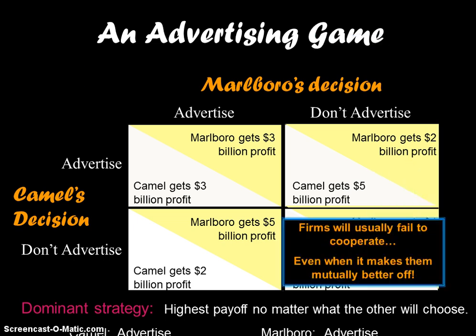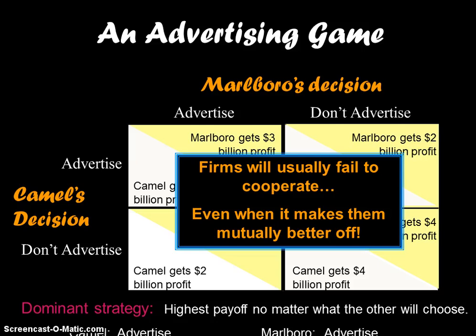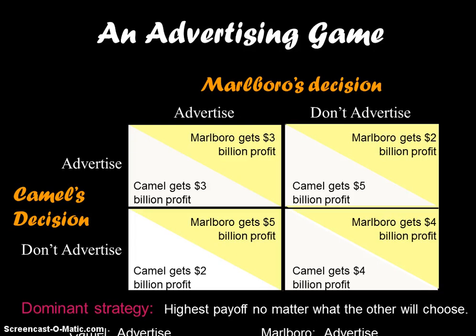Firms are not going to cooperate, even if they'd both be better off if they did. In this game, if neither Marlboro nor Camel advertised, they'd both make $4 billion apiece in profits, which would make them both better off. But since they can't trust each other, both firms — both players — are going to end up advertising and earning $3 billion apiece in profits.